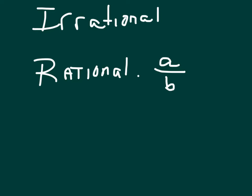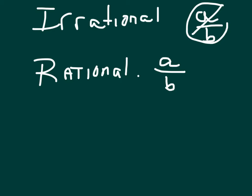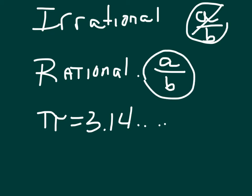That means that irrational numbers cannot be written in the form of A over B — it won't work, you can't do that. So numbers like pi, which is 3.14 and goes on forever and never repeats itself, cannot be written in the form of A over B.